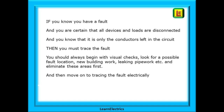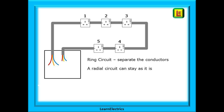But if a fault is detected, how do we go about tracing the fault behind all those walls and under the floorboards? If you know you have a fault and you are certain that all devices and loads are disconnected and only the conductors are left in the circuit, then you must trace the fault. You should always begin with visual checks — look for possible fault locations such as new building work or leaking pipework — and eliminate these areas first. Then move on to tracing the fault electrically with your test meter. When tracing faults we do not want ring circuits to be connected as a ring; we want the two ends to be physically separated, otherwise the return leg may confuse the results.